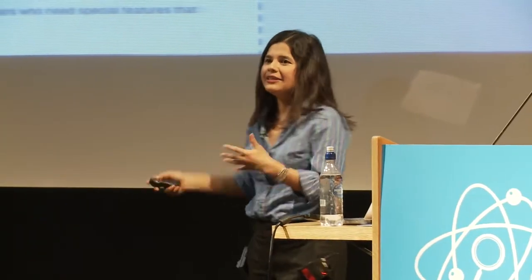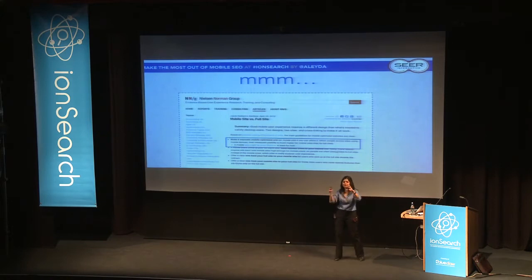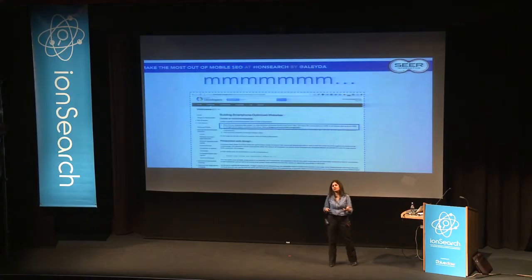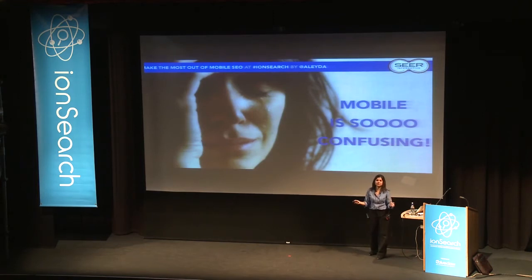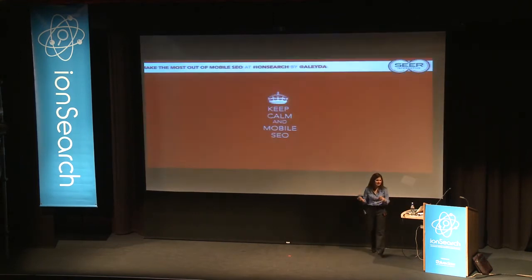There are usability experts like Nielsen who say you need to provide a very specific mobile experience. The audience behaves differently, interacts with the device differently, and looks for different content — you should target them with a specific presence, even an app if possible. Then Google says, from an SEO and crawling perspective, it's more efficient to give one URL per piece of content, and responsive web design is the best approach. So it's a little confusing — the thing is to keep calm and start doing mobile SEO.